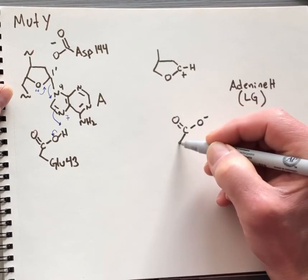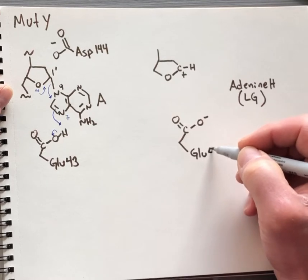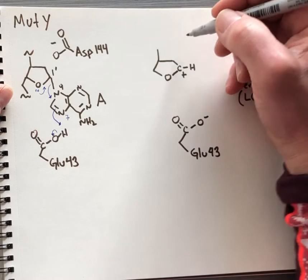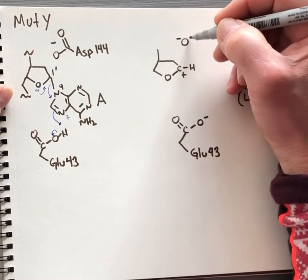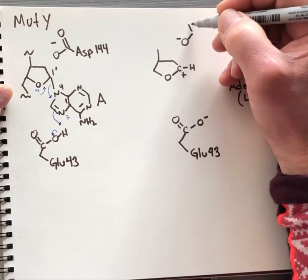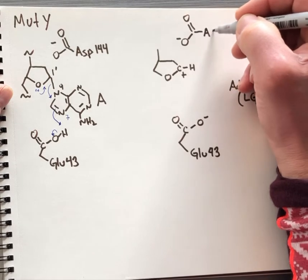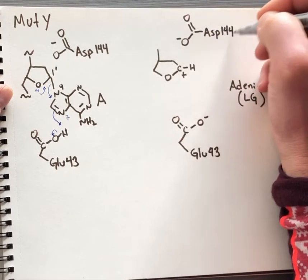Glutamate 43 is now in its conjugate base form, and that'll be important for the final step in this hydrolytic reaction. But what I really want to call attention to right now is the role of aspartate 144 for stabilizing this highly unstable transition state.